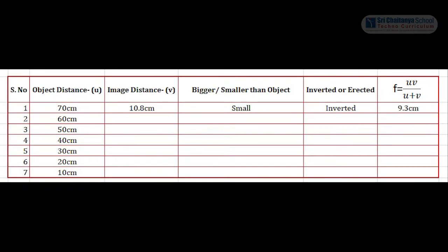Now note down the values in the given table. Object distance is 70 cm, image distance is 10.8 cm. And from the formula, we can calculate the focal length as 9.3 cm.